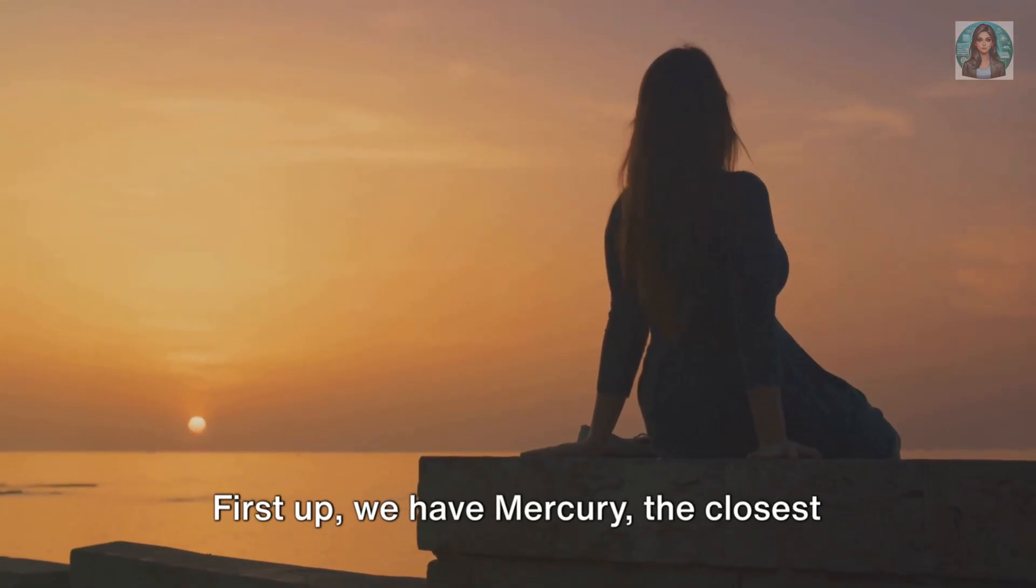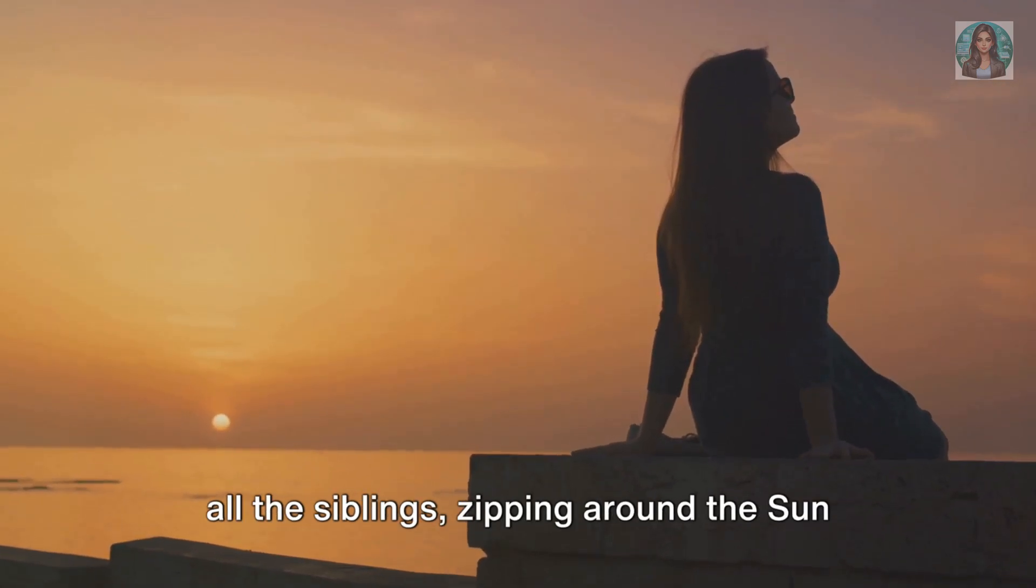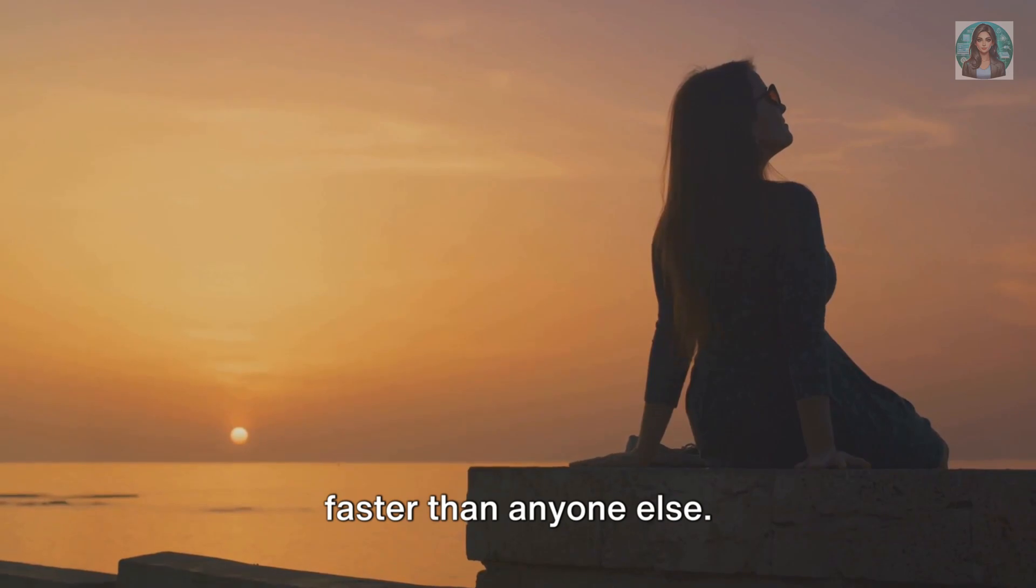First up, we have Mercury, the closest planet to the sun and the speediest of all the siblings, zipping around the sun faster than anyone else.